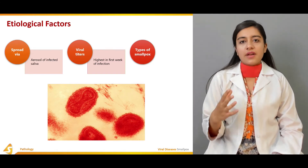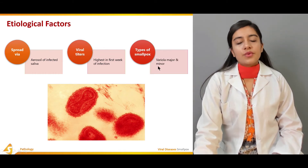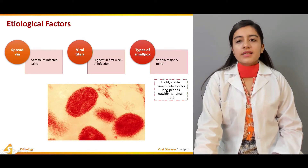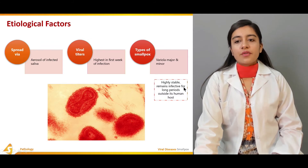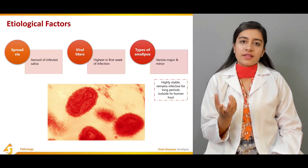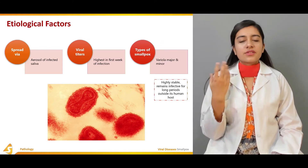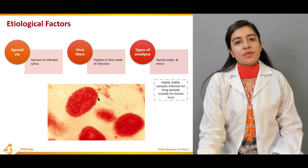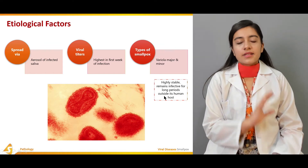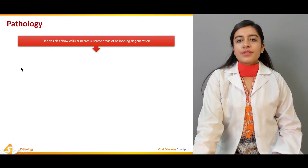There are two types of smallpox caused by two types of viruses: variola major and variola minor. The variola virus is highly susceptible and highly stable, remaining infectious for long periods outside the human host. This stability varies depending on the structure and type of the virus.